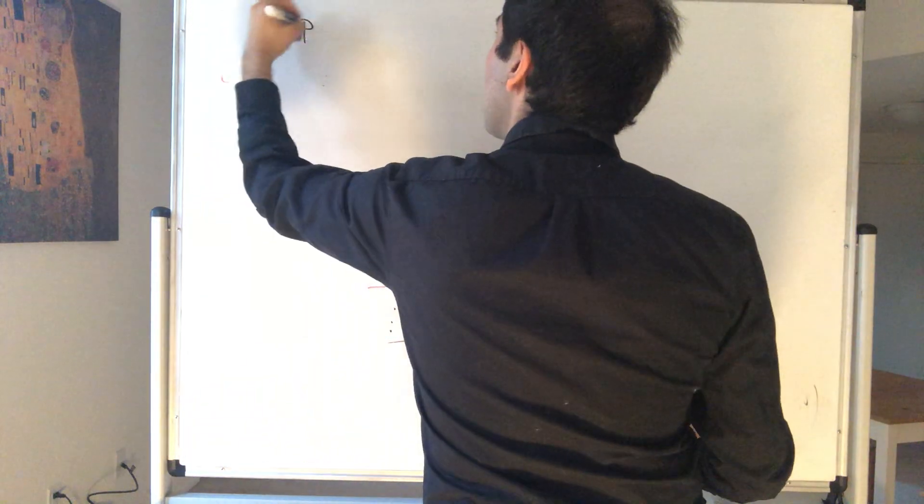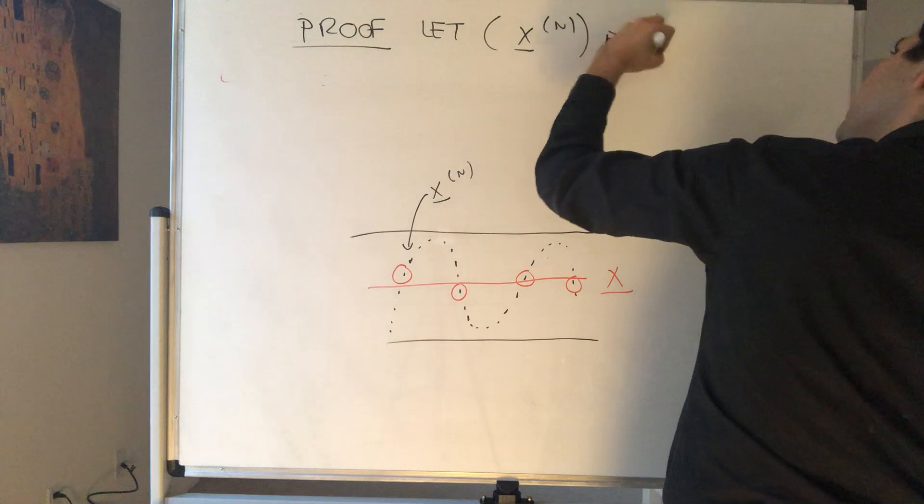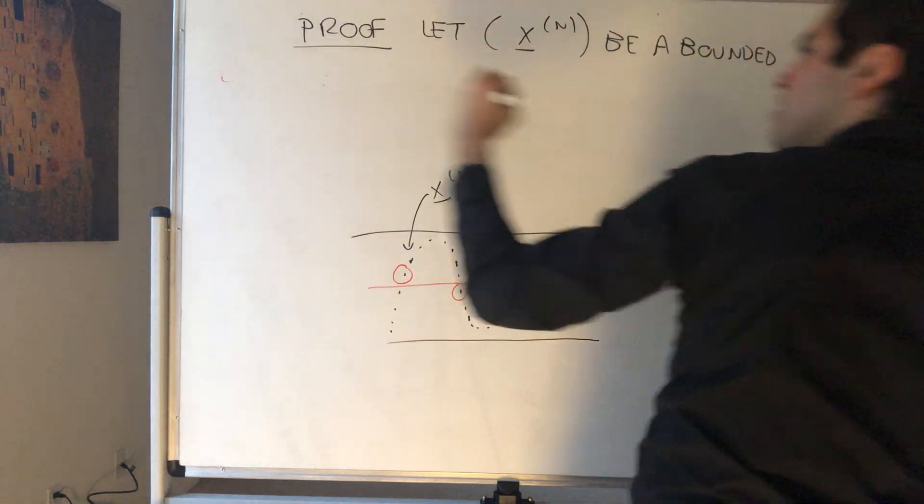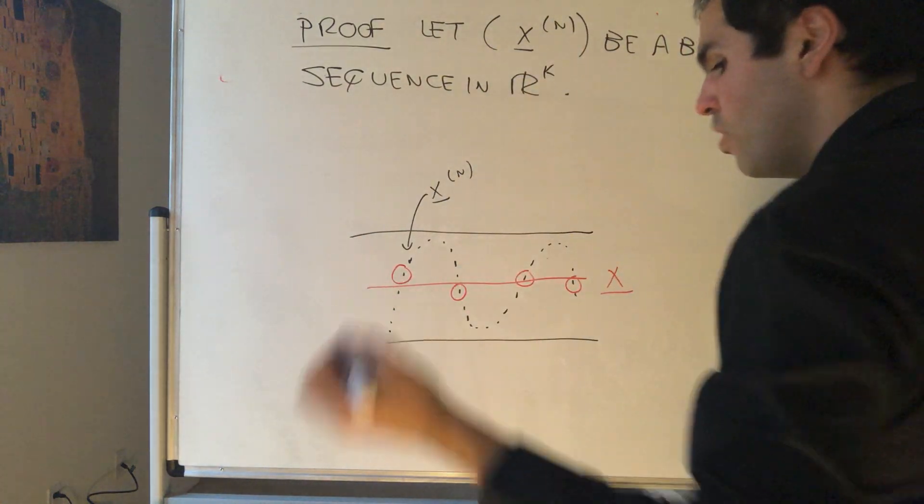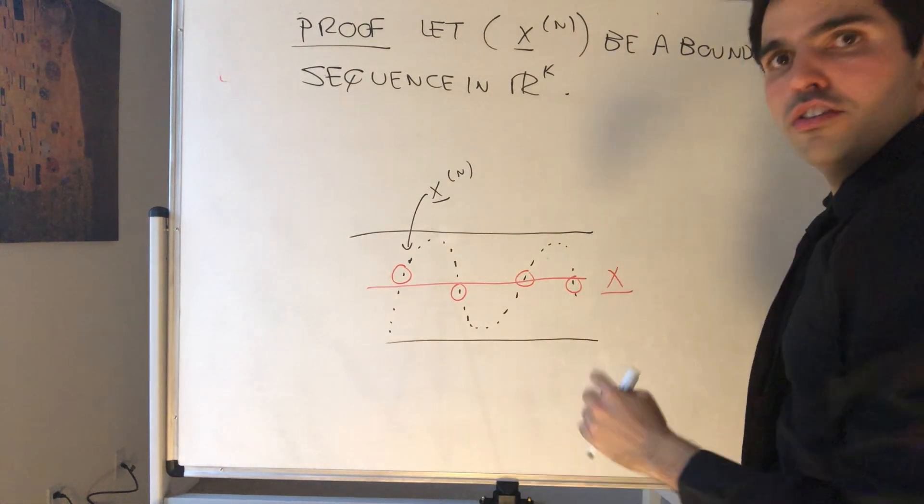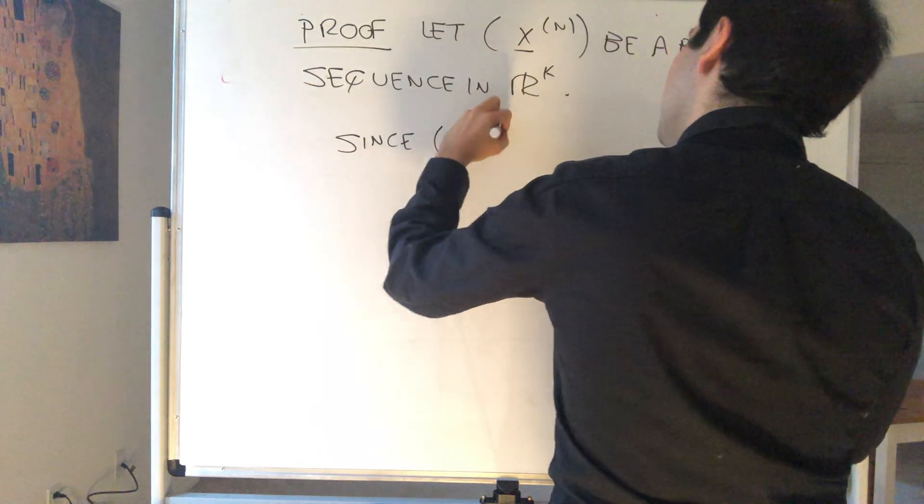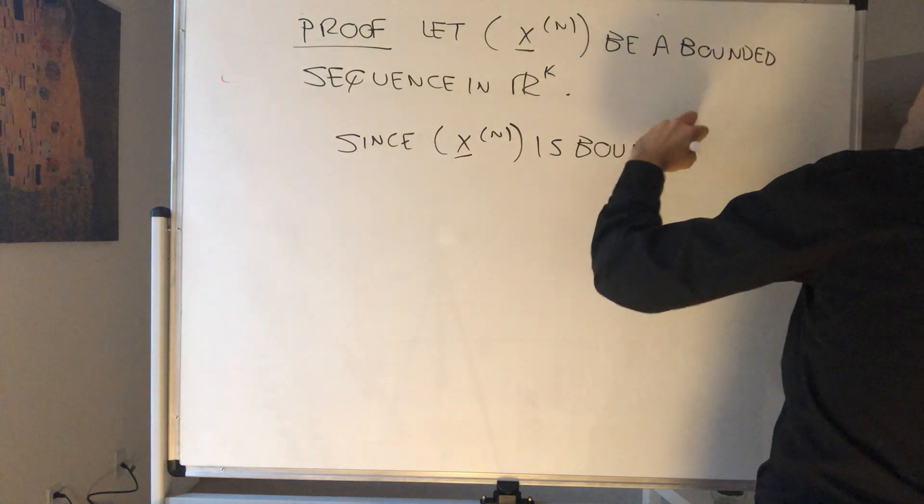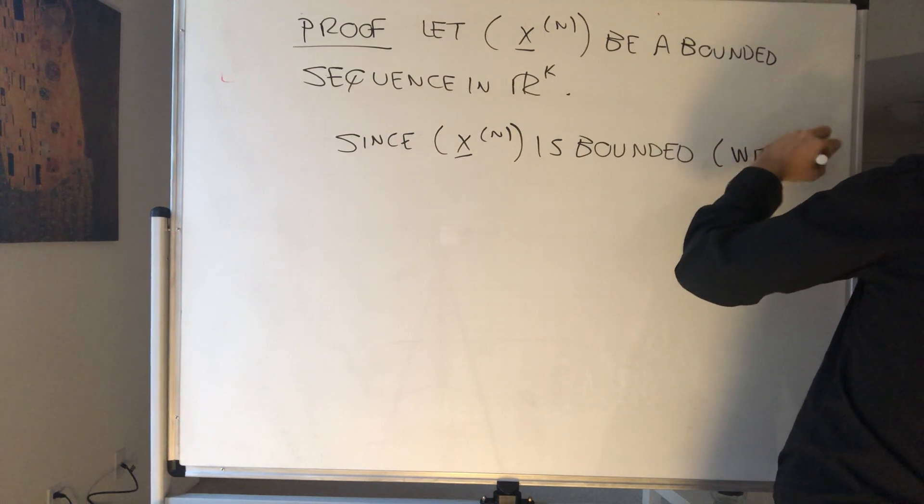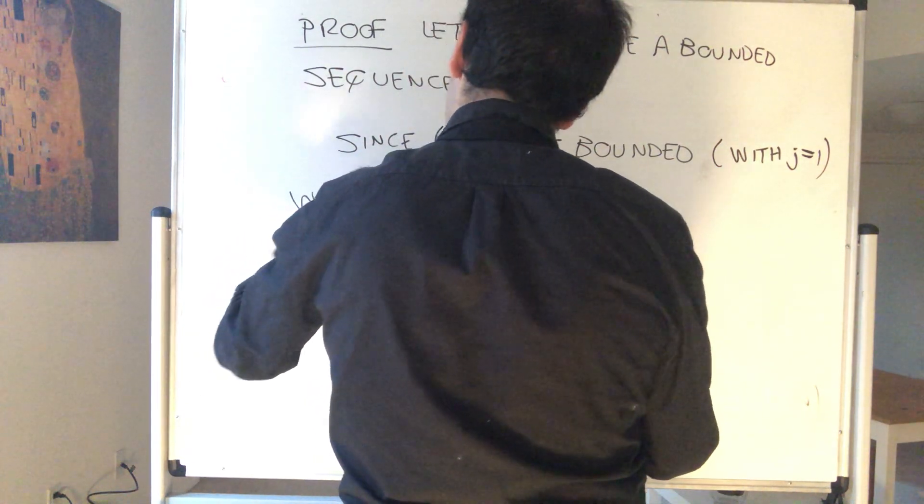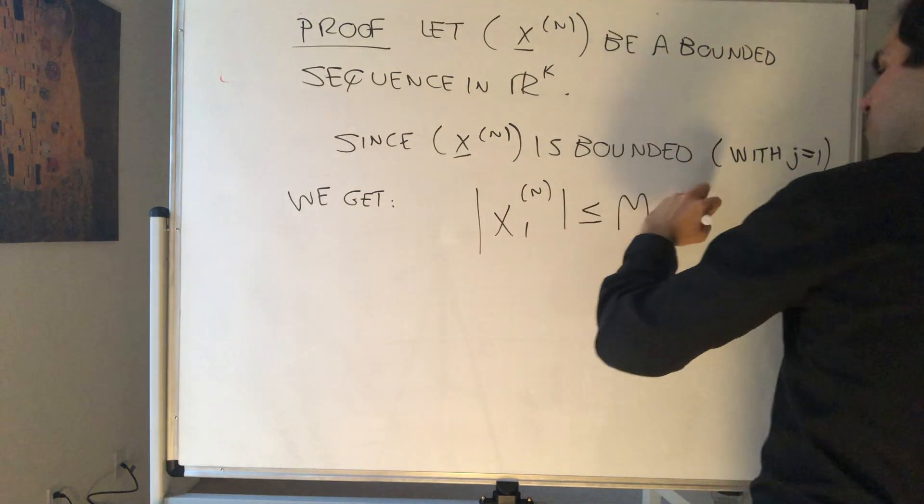Proof: Let X_n be a bounded sequence in R^k. But then what does that mean? It means its component is bounded. So in particular, the first component is bounded. So since X_n is bounded, we get with the definition with j equals 1, we get that there is a constant M such that |X_n1| is less than or equal to M for all n.